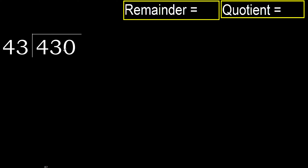430 divided by 43. 4 is less, therefore next. 43 is not less, therefore with 43.